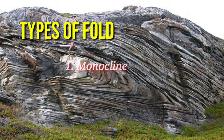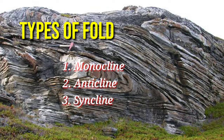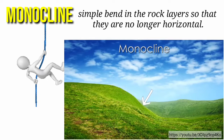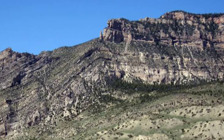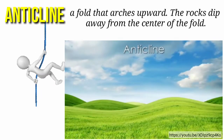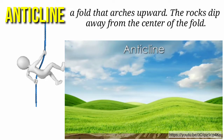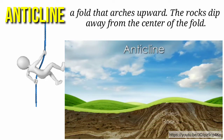There are three types of folds: the monocline, anticline, and syncline. A monocline is a simple bend in the rock layers so that they are no longer horizontal — it looks like a single step. The older rocks are found at the bottom of the monocline and the newer ones are on top. An anticline is a fold that arches upward. The rocks dip away from the center of the fold. The top of the arc is called the crest. The oldest rocks are at the center of the anticline and the youngest are draped over them.